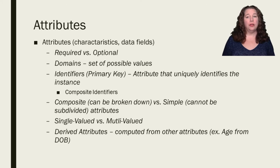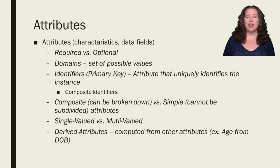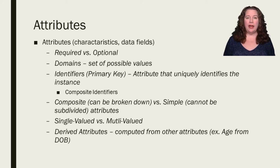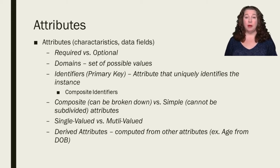Our attributes are those data fields — the characteristics of your entity. When we look at an attribute, we have options: is it required or is it optional? This is where you start keeping track of whether that value has a default value of null. Can it be null? For example, if you have an employee, spouse's name might be optional because people aren't required to have a spouse. But social security number might be required — you have to include it for tax purposes. So that's a required attribute as opposed to an optional one.